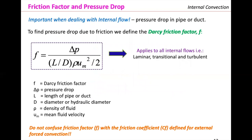Friction factor and pressure drop become important when dealing with internal flow. To find the pressure drop due to friction, we define the Darcy friction factor with the equation: f = ΔP / (L/D × ρU²/2), where f is the Darcy friction factor, ΔP is the pressure drop, L is the pipe length, D is the diameter (or hydraulic diameter for non-circular sections), ρ is the fluid density, and U is the mean fluid velocity. This applies to all internal flows — laminar, transitional, and turbulent.